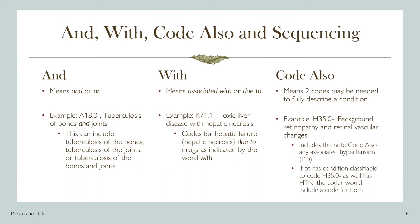The code also note informs the coder that two codes may be necessary to fully describe a condition. For example, H35.0, background retinopathy and retinal vascular changes, includes a code also note indicating that any associated hypertension, I10, would also be reported. With the code also note for H35.0, this note does not include sequencing instructions regarding which code should be listed first, so the coder must determine the sequencing by reading through the provider's documentation to identify the primary diagnosis.